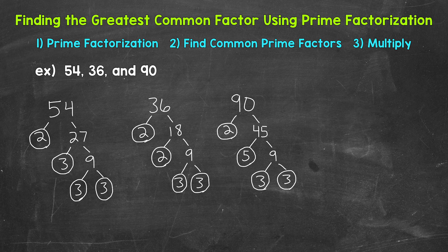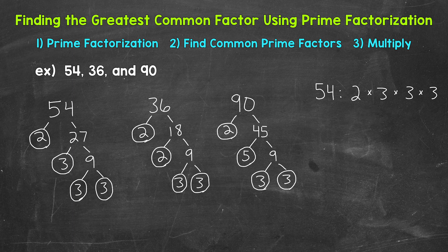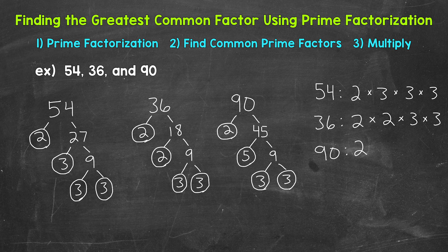Now that we have the prime factorization of all three of our numbers, we need to look for common prime factors — prime factors that all three of our numbers share. To make it easier, I'm going to list the prime factors off to the side. Starting with 54: 2, 3, 3, and 3 — so 2 times 3 times 3 times 3 equals 54. For 36: 2, 2, 3, and 3 — so 2 times 2 times 3 times 3 equals 36. And for 90: 2, 3, 3, and 5 — so 2 times 3 times 3 times 5 equals 90.